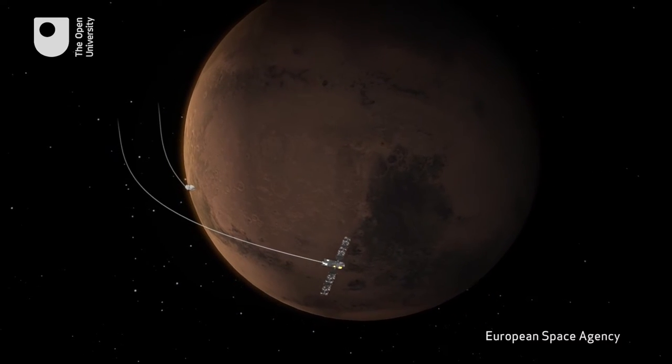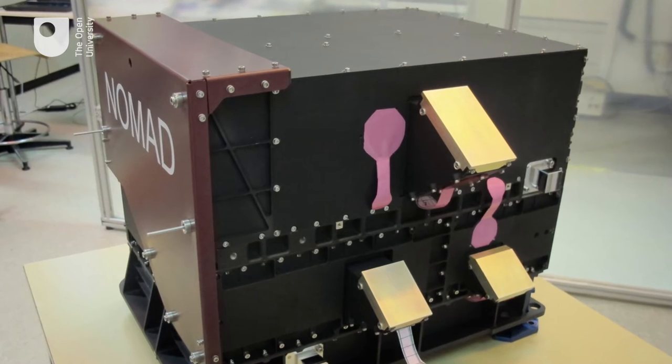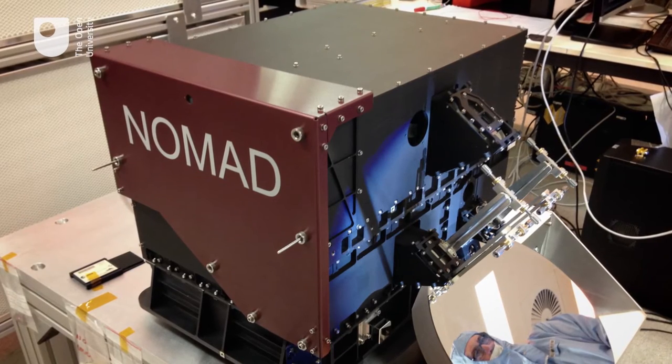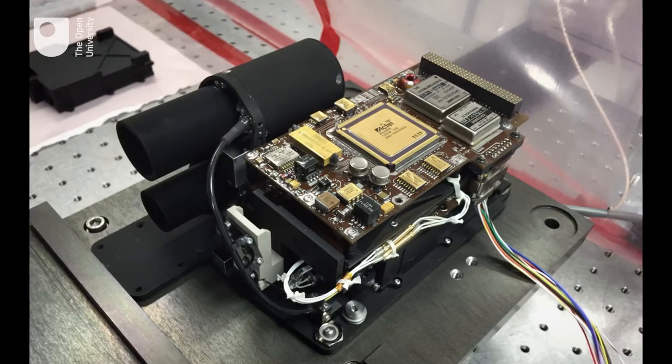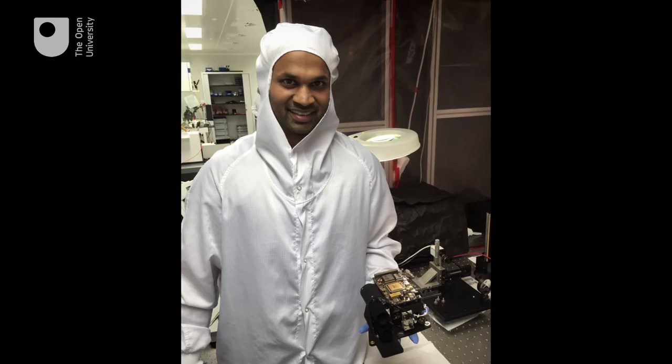And the most exciting science discovery may come from an instrument on the trace gas orbiter called NOMAD. So at the Open University we have built one of the three spectrometers that is inside NOMAD. It's called UVIS and it's a spectrometer that looks at visible and ultraviolet light.